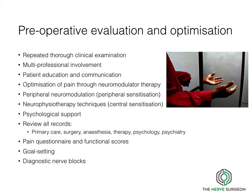Psychological support must be provided, and where someone has had previous surgery I would advocate a review of all records — primary care, surgery, anaesthesia, therapy, psychology and psychiatry — to understand the impact on the individual's life, timing of onset of symptoms, and other contributing factors. Validated pain questionnaires and functional scores are useful to map an individual's response to treatment over time. Goal setting allows the patient to understand the aspiration of treatment. Diagnostic nerve blocks can be used to assimilate and understand the pain signalling pathways and where the pain driver is coming from in advance of surgical intervention.